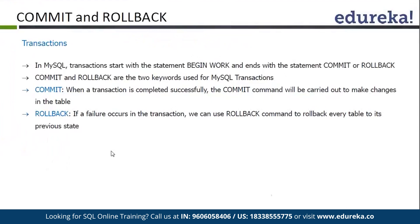Transactions basically begin with BEGIN and end with COMMIT or ROLLBACK. Either we commit our transactions, or if there is an issue, we rollback our transaction. COMMIT simply means if the transaction is completed successfully, the commit command will make the changes permanent. ROLLBACK means if there is an issue in any of the transaction actions, everything will be rolled back.